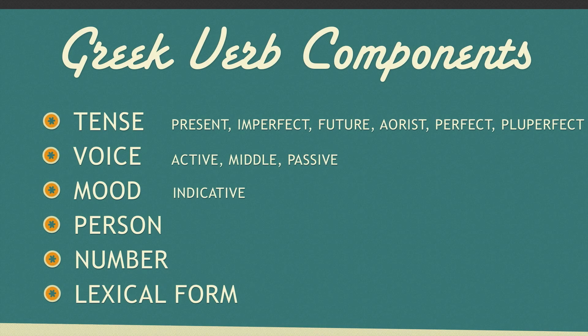Greek has three persons: first, second, and third. And you already know Greek has two numbers: singular and plural.